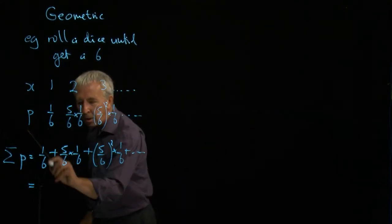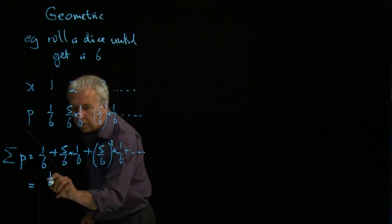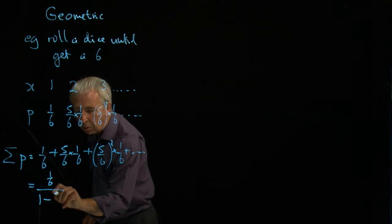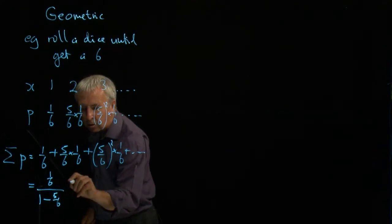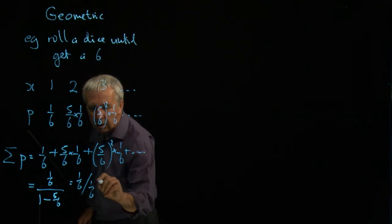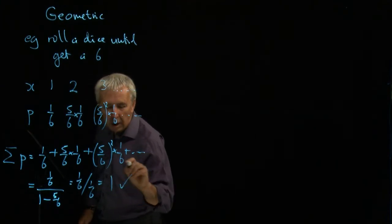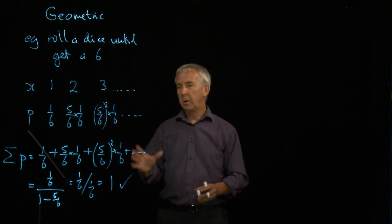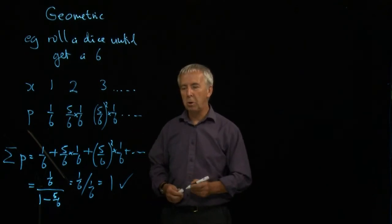The formula is the first term, one-sixth, divided by one minus the ratio, one minus five-sixths. So that's one-sixth divided by one-sixth, which of course equals one. So that's exactly what we want. This is a genuine probability distribution. The probabilities total one.